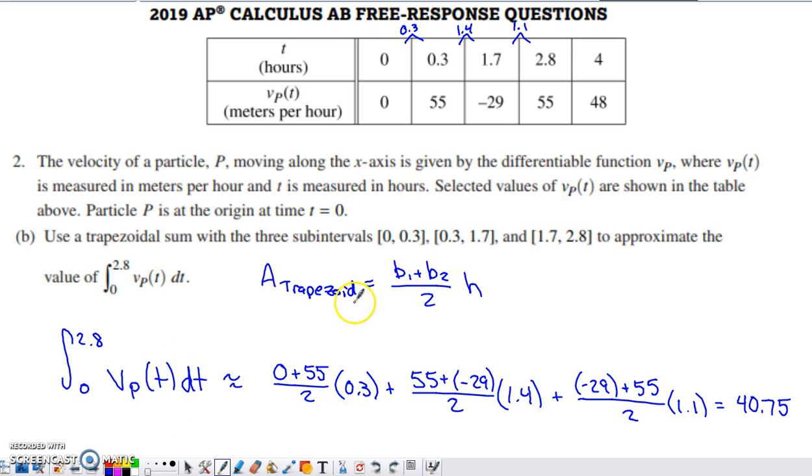I wanted to do a trapezoidal sum, so I did need to recognize that the area of a trapezoid is the average of the parallel sides, which are typically called the bases, times the distance between them, which is typically called the height. I was doing that trapezoidal sum to approximate this integral. The average of the y values on the interval 0 to 0.3 times the distance between those parallel sides, adding on to that the average of these two velocity values times the distance between them. As long as everything got into the calculator appropriately, I ended up with 40.75 for the approximation for that integral with that trapezoidal sum.